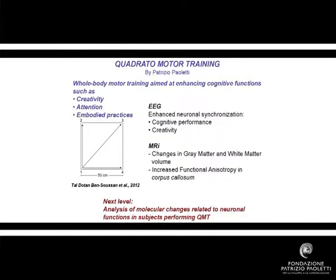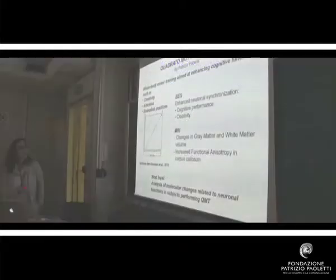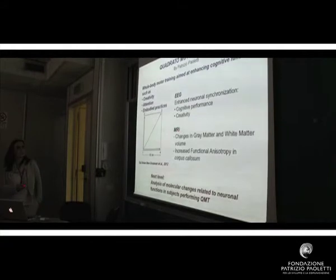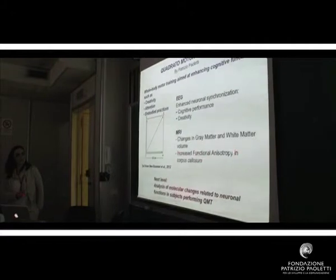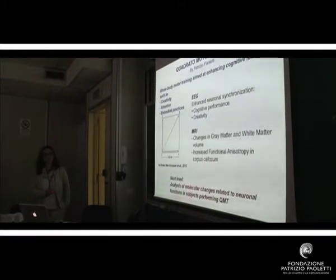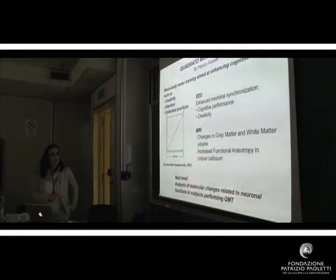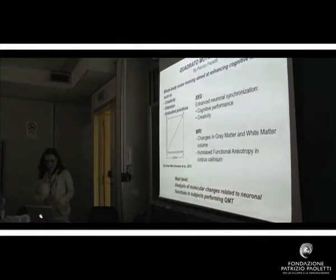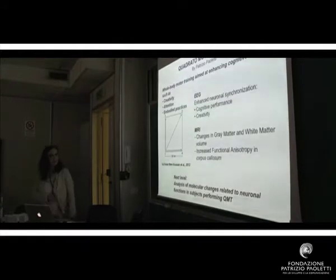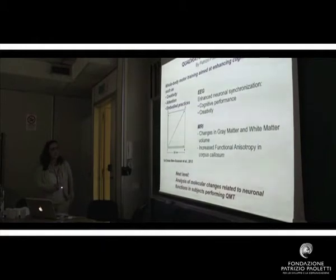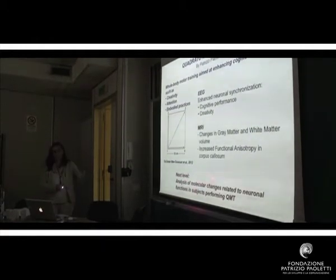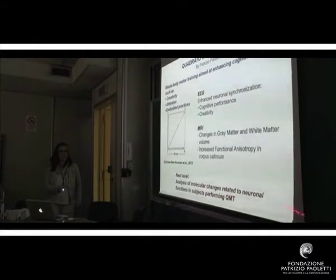Here I summarized basic results from the previous talks. From EEG we have observed enhanced neuronal synchronization, and from magnetic resonance, increase in volume of gray and white matter and increased functional anisotropy in corpus callosum, reflecting maybe better interhemispheric transfer. Our intention is to go to the next level, which is the analysis of possible molecular changes related to neuronal functions in subjects performing Quadrato.